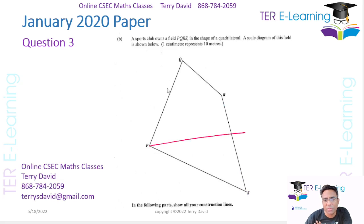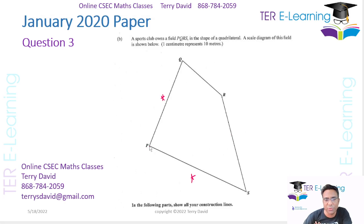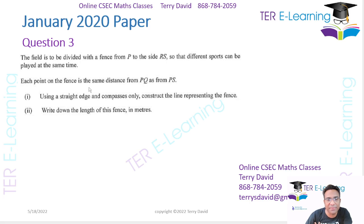So PQ and PS are these two lines here. Because they're talking about equal distances, what we're trying to do is bisect this angle at P — this angle and that angle are going to be equal. They're telling us each point on the fence is the same distance from PQ as from PS. Using a straight edge and compass only, construct the line representing the fence and write down the length of the fence in meters.